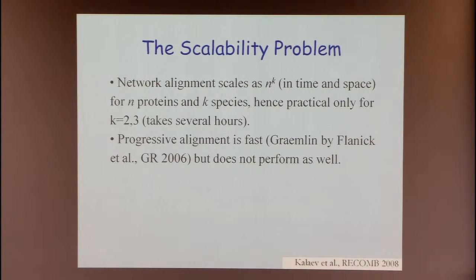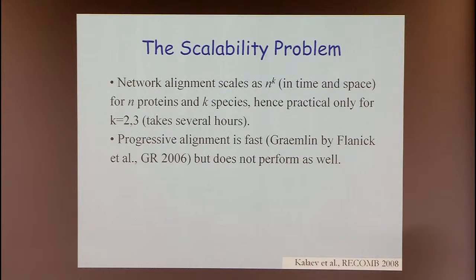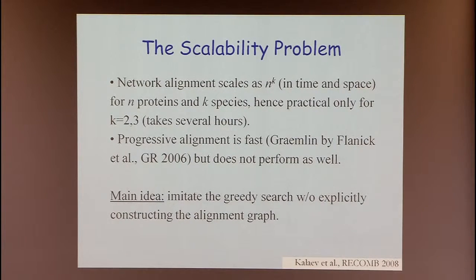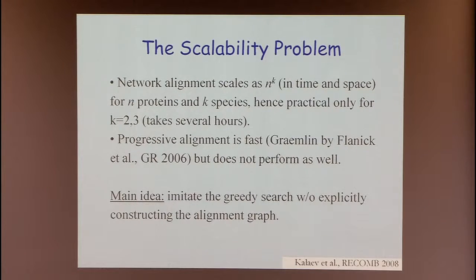Interesting approaches have attacked this problem. One by the group of Seraphim Batzouglou proposed borrowing progressive alignment from sequences — start with two sequences, align the third, and so on — but it didn't perform as well as the direct comparison. It turns out you can avoid the exponential increase in graph size by recognizing you don't need an explicit representation of the graph; an implicit representation still allows the same algorithmics.